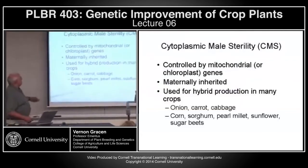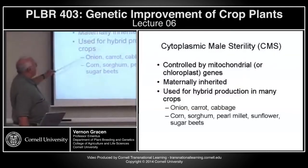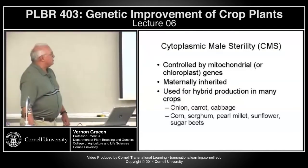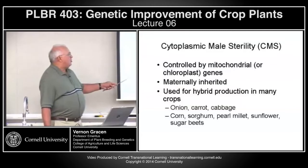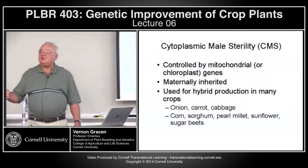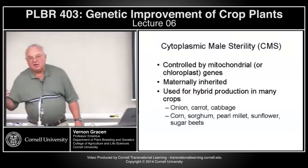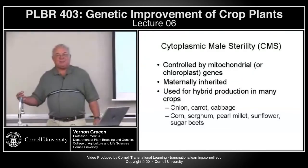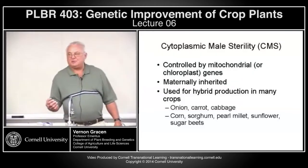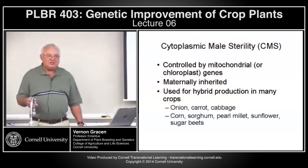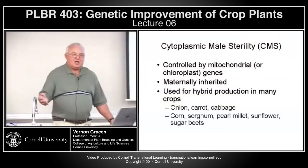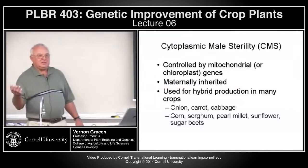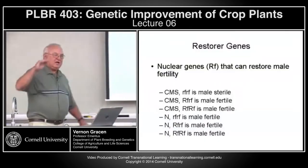Cytoplasmic male sterility (CMS) is controlled by mitochondrial genes — or sometimes chloroplast genes — and is maternally inherited. It's used for hybrid production in many crops: onion, carrot, cabbage, corn, sorghum, pearl millet, sunflower, sugar beets, and rice. It has also been used in wheat, but the economics of hybrid production don't make wheat feasible. In rice, it's only practical in China, where yield advantage justifies the cost.